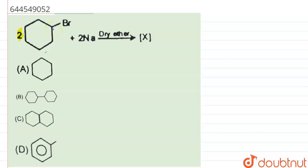We have been given 2-bromocyclohexane plus 2 Na in the presence of dry ether. What is going to happen?